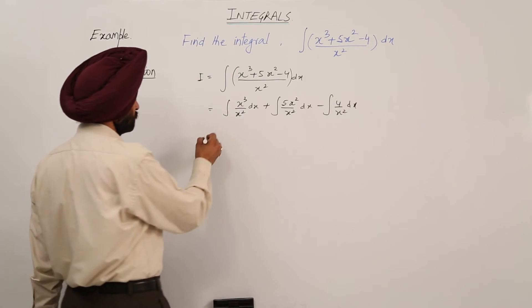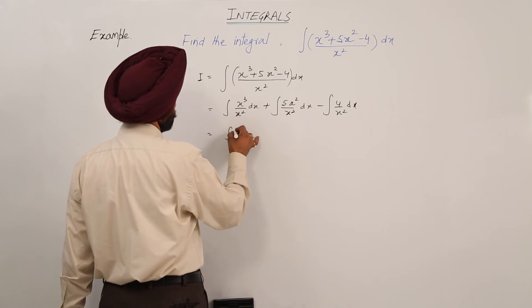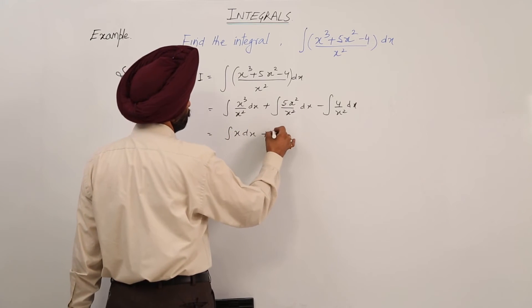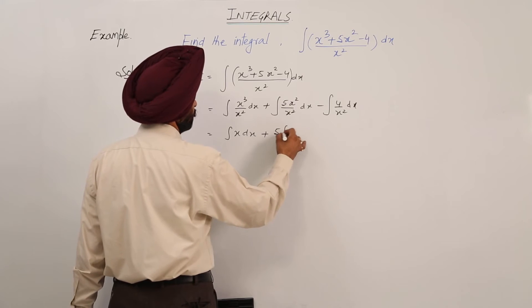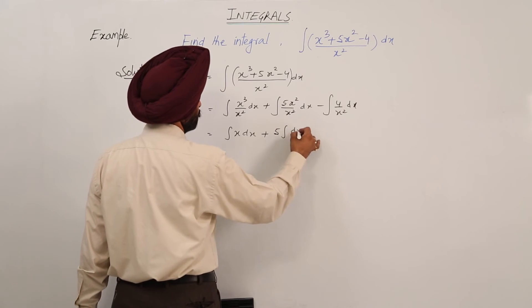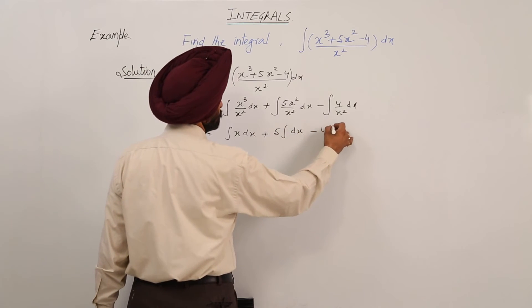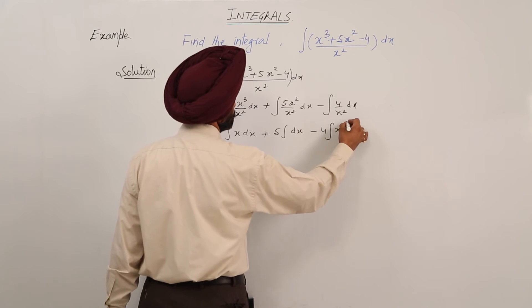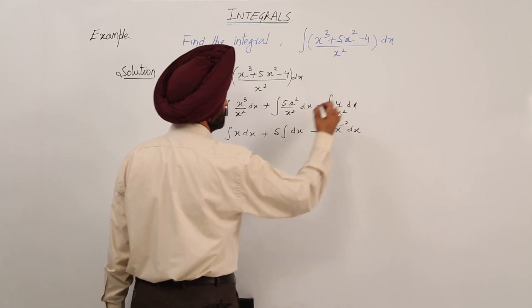Now this will become integration of x dx, plus 5 integration of dx, minus 4 integration of x raise to power minus 2 dx.